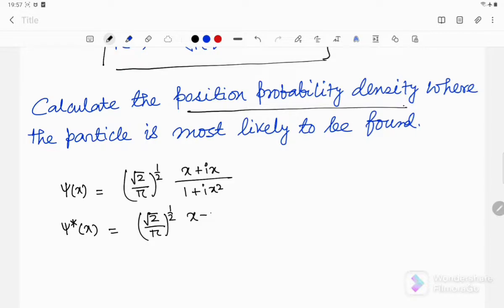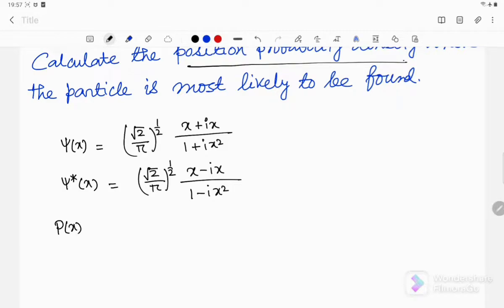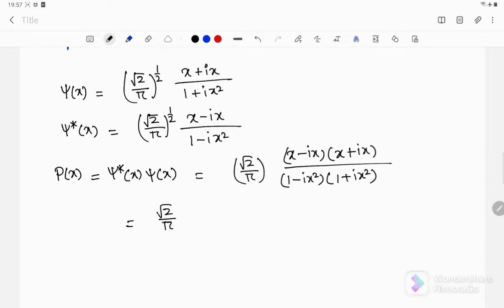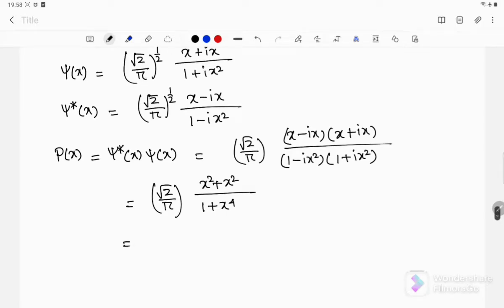So probability density P is ψ*ψ. That would be √(2/π) times (x-ix)(x+ix) divided by (1-ix²)(1+ix²). That produces (x²+x²)/(1+x⁴), so we can write 2√2/π times x²/(1+x⁴). This is the probability density.